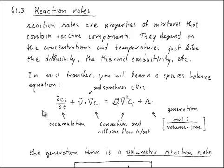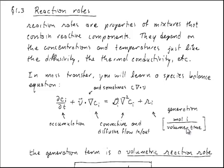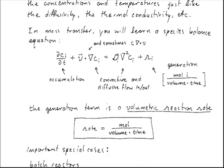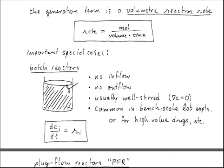This is a partial differential equation that governs all of the contributions that determine whether a species is increasing or decreasing in concentration. The generation term is particularly important — that is effectively our reaction term; it is the volumetric generation rate of species i. So when we say rate, we refer to per time, and volumetric means per unit volume. The rate, by definition, is a number of moles per unit volume per unit time.